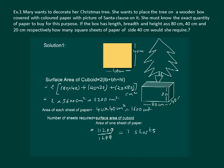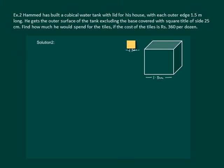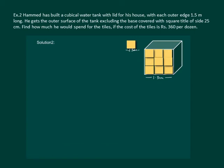So Mary will require 7 sheets of paper. Now let us read the next question. Hamid has built a cubical water tank with a lid for his house, with each outer edge 1.5 meters long. He gets the outer surface of the tank excluding the base covered with square tiles of side 25 cm. Find how much he would spend for the tiles if the cost of the tiles is Rs. 360 per dozen. Since Hamid is covering 5 outer faces of the tank, he needs to know the surface area excluding the base. We know the surface area of a cube is 6a².